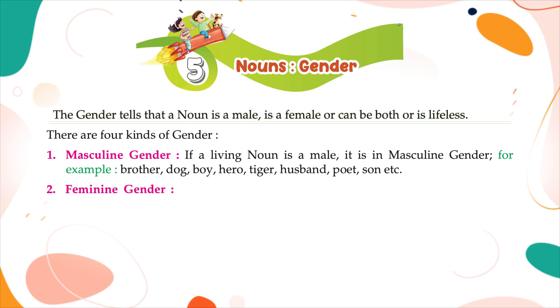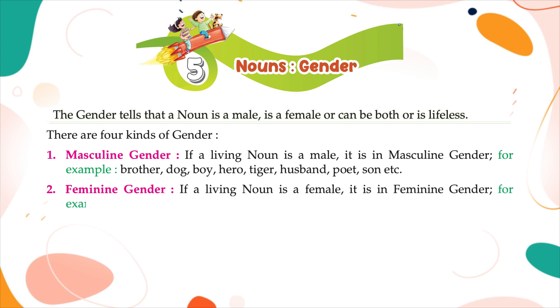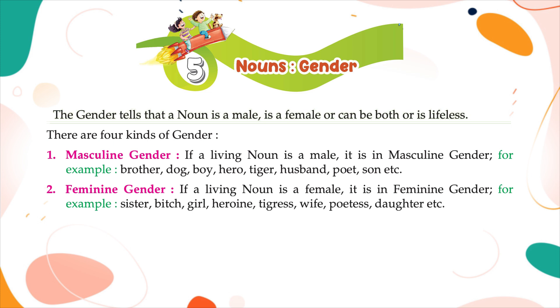Feminine Gender: If a living noun is a female, it is in feminine gender. For example: sister, bitch, girl, heroine, tigress, wife, poetess, daughter, etc.